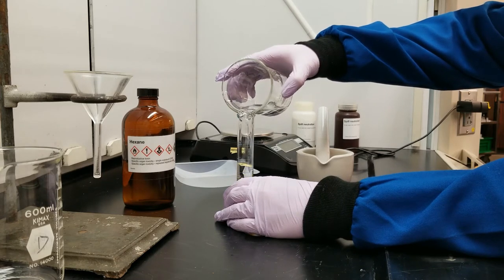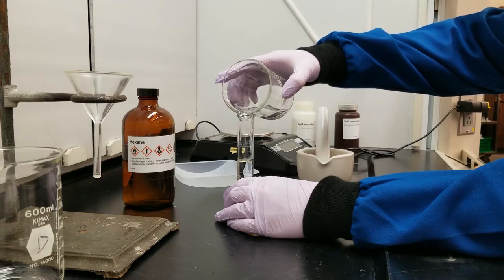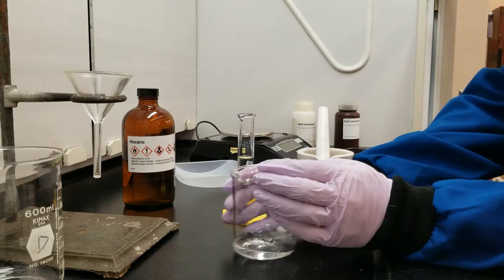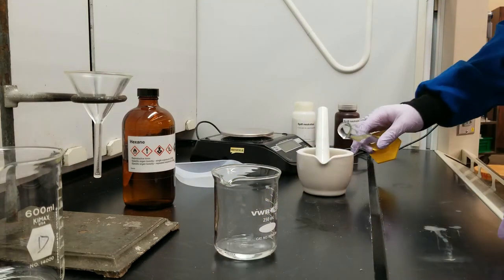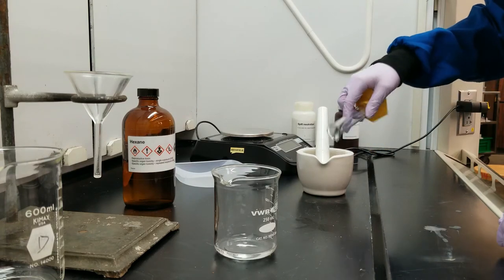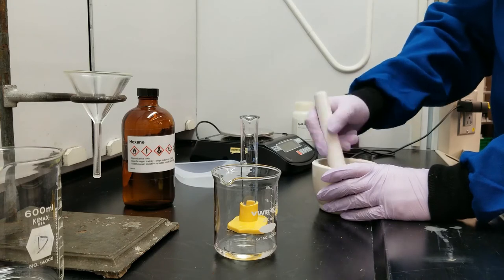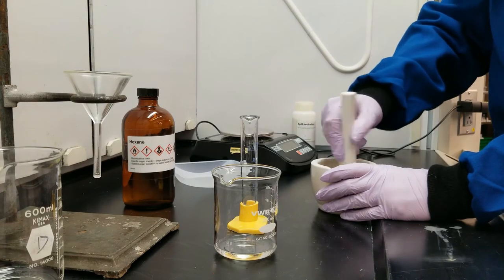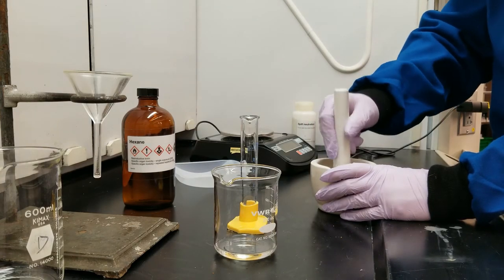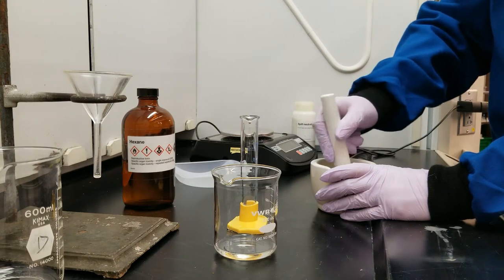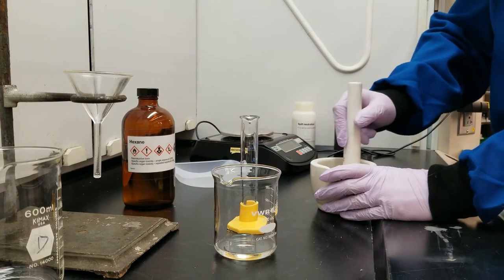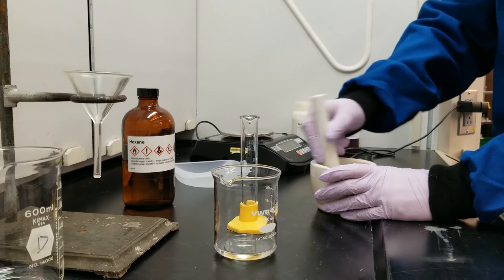I'm going to measure out about 20 milliliters of hexane, and I'm going to add that to my mortar. And then I'm going to continue to grind up my potato chips for about a minute.